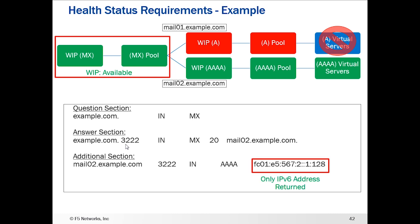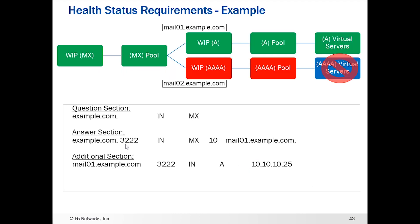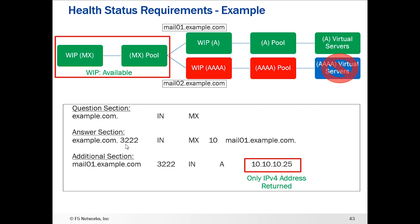However, when it goes to respond, it's only going to return IPv6 addresses because the pool members that contain A record wide IPs are down. The customer may configure it this way and get into a situation where they're not getting all of the wide IP responses they want for MX records. The flip side is also true: if the Quad A wide IP in the pool is down, the MX wide IP is still going to show as available, but only IPv4 addresses will be returned.